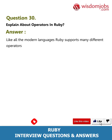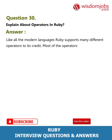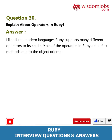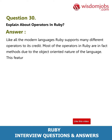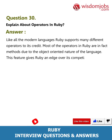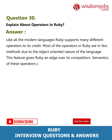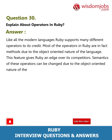Question 30: Explain about operators in Ruby. Answer: Like all modern languages, Ruby supports many different operators. Most of the operators in Ruby are in fact methods, due to the object-oriented nature of the language. This feature gives Ruby an edge over its competitors. The semantics of these operators can be changed due to the object-oriented nature of the language.